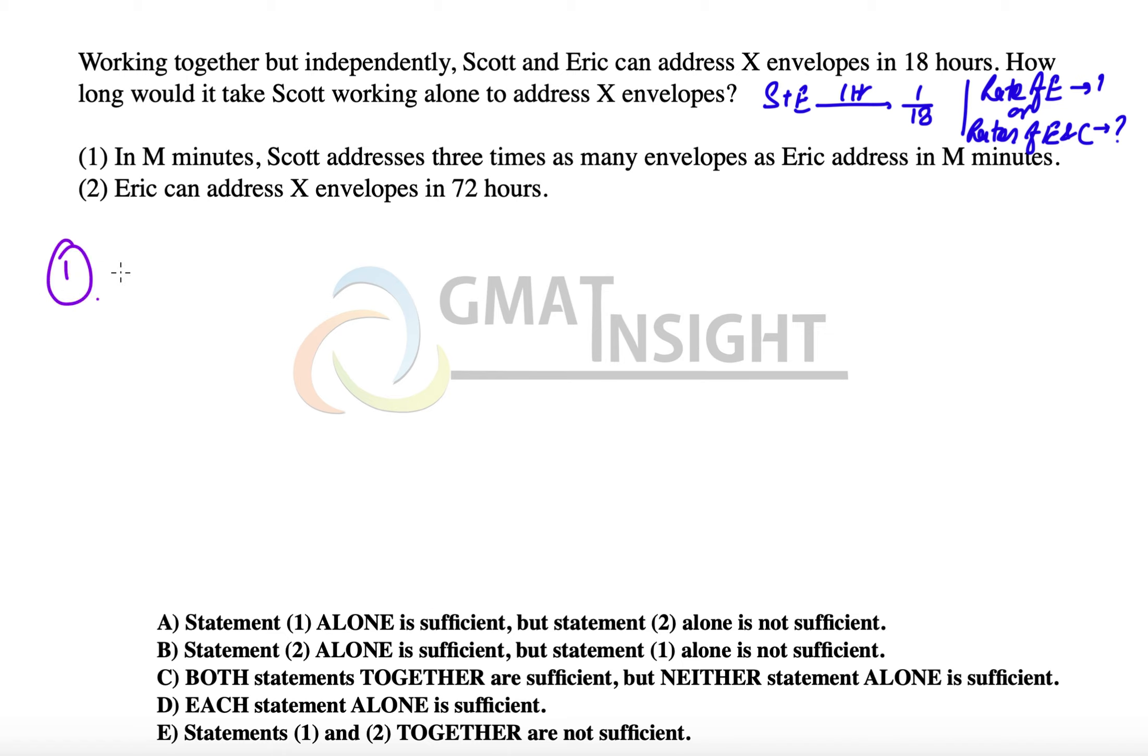Let's look at the first statement: In M minutes, Scott addresses three times as many envelopes as Eric does. That means Scott is three times as efficient as Eric, which means Scott and Eric together are as efficient as three Erics and one Eric—four Erics. If four Erics take 18 hours, then one Eric alone